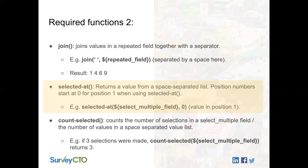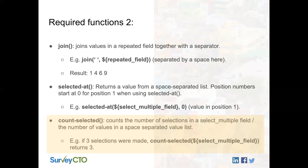The sixth and final function we'll be using is COUNT-SELECTED. COUNT-SELECTED is a simple function: it counts the number of selections in a select-multiple field or the number of values in a space-separated value list. For example, if three selections were made in a select-multiple field, COUNT-SELECTED would return 3. Looking at our earlier JOIN example with four values in a space-separated list, COUNT-SELECTED would return 4. Those are all the functions we need to understand — we'll see these in action, and I'll show you examples of what this does in the data.